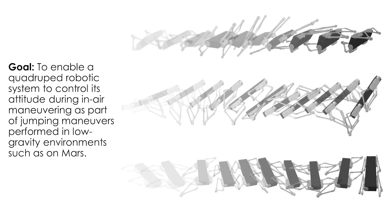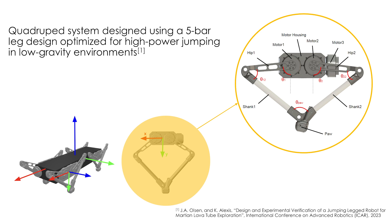A quadruped system is employed that is built around four identical legs optimized for high-power jumping in low-gravity environments such as on Mars. By modeling the system dynamics and kinematics, we identify the repeating motion patterns of the robot's legs such that desirable attitude commanding torques are generated.